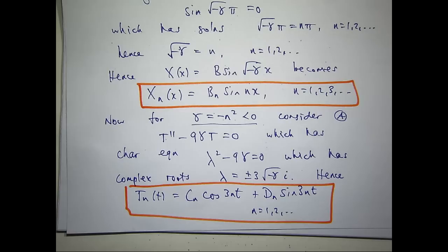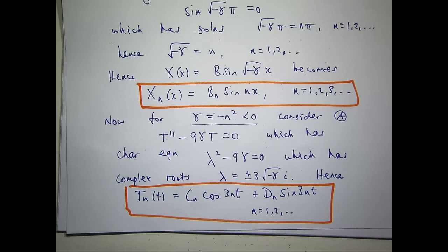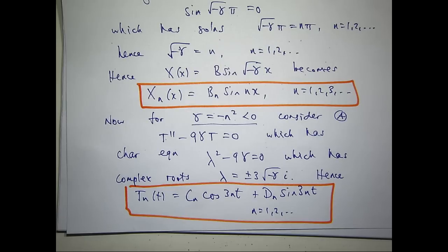The usual practice now is to multiply big X sub n and big T sub n together, just like our original form, and somehow find out the arbitrary constants. Because we're dealing with linear homogeneous equations, we can use the rule of superposition: if we have a sequence of solutions, we can sum them all up and that forms a new general solution.